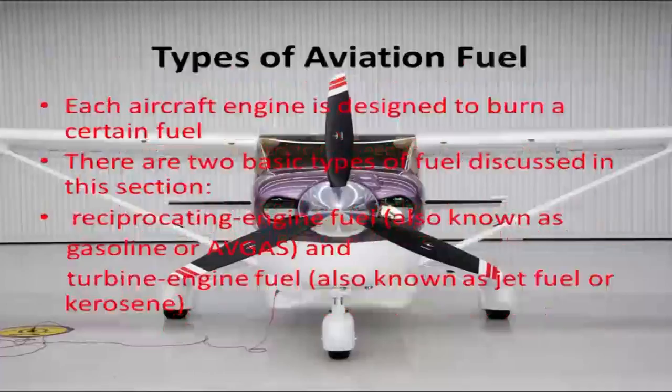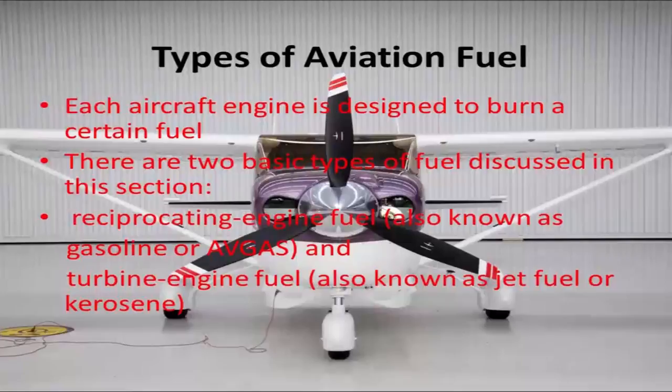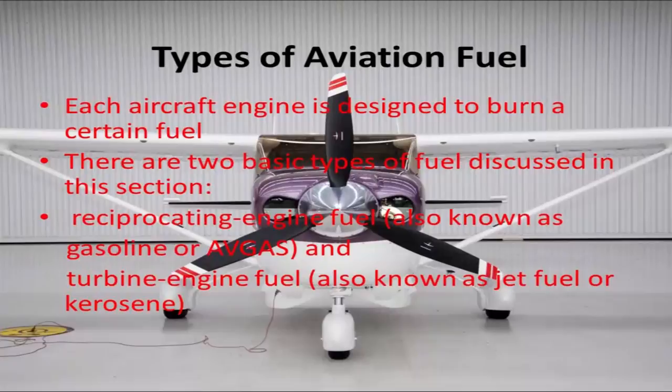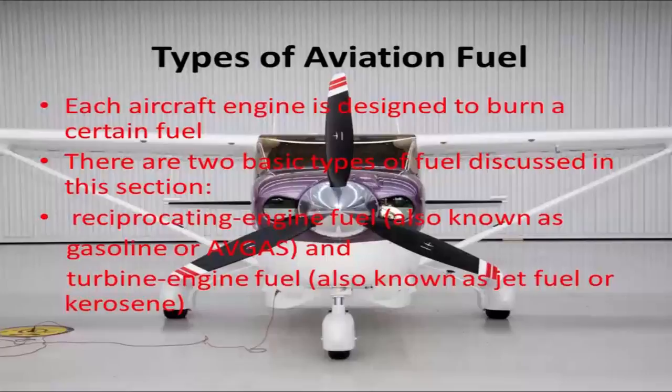There are two main types of aviation fuel. Each aircraft engine is designed to burn a certain fuel. One is the reciprocating engine fuel, also known as gasoline or F-gas, and the other is turbine engine fuel, also known as jet fuel, kerosene, or ATF — aviation turbine fuel.